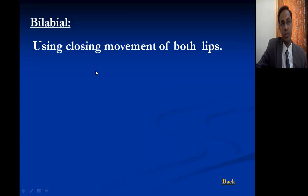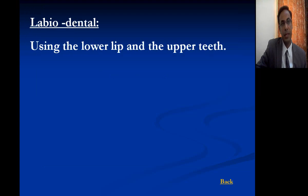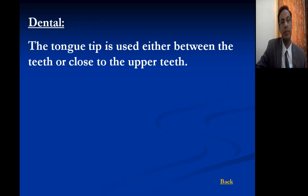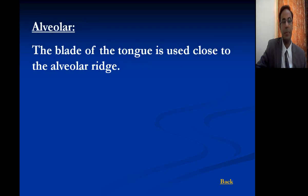Here are the definitions. Bilabial means using the closing movement of both lips — bilabial, from lips. Labiodental means using the lower lip and the upper teeth — lips plus teeth. Dental means the tongue tip is used either between the teeth or close to the upper teeth. Alveolar means the blade of the tongue is used to close against the alveolar ridge.